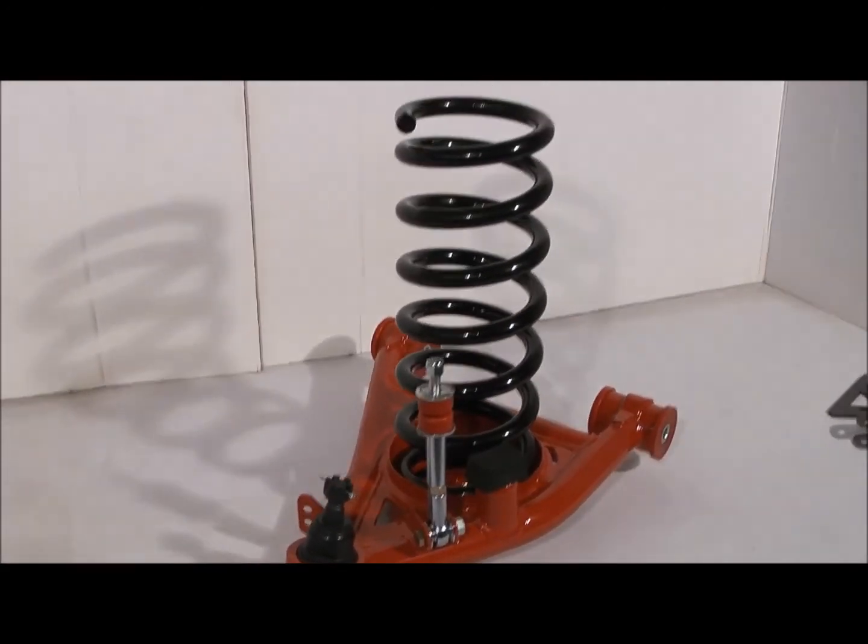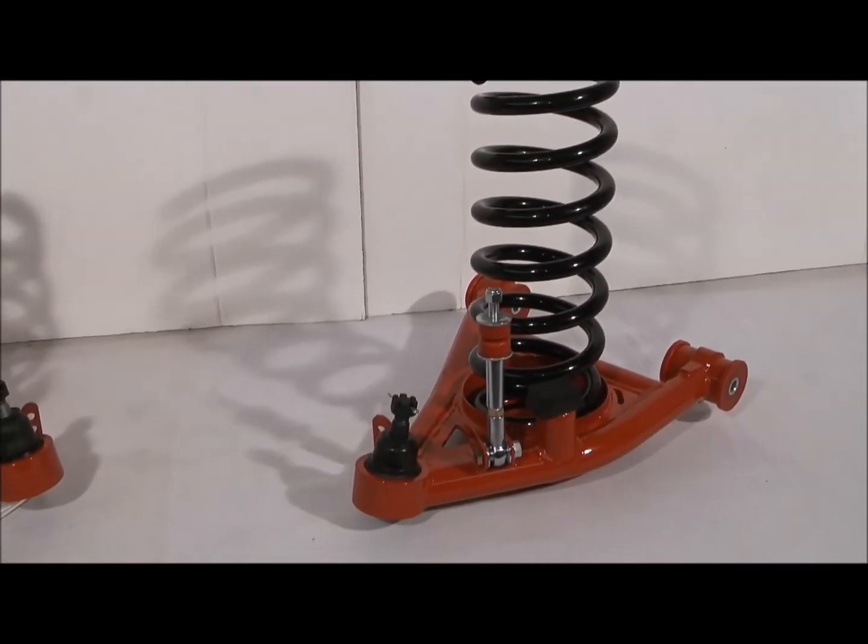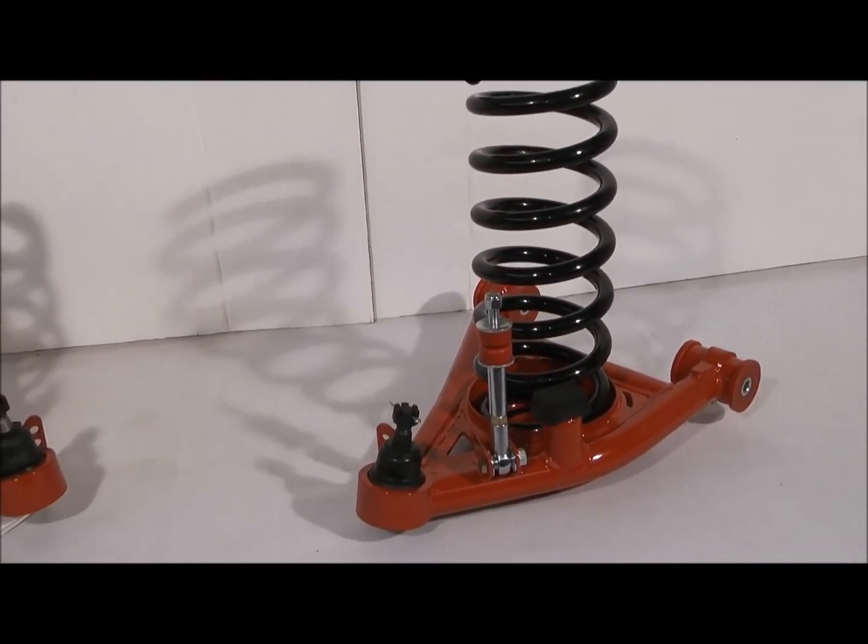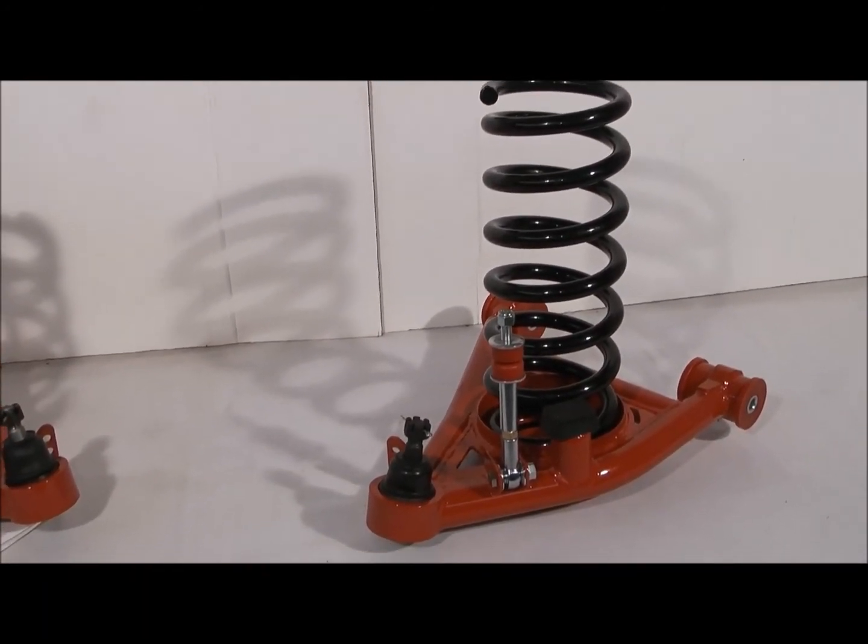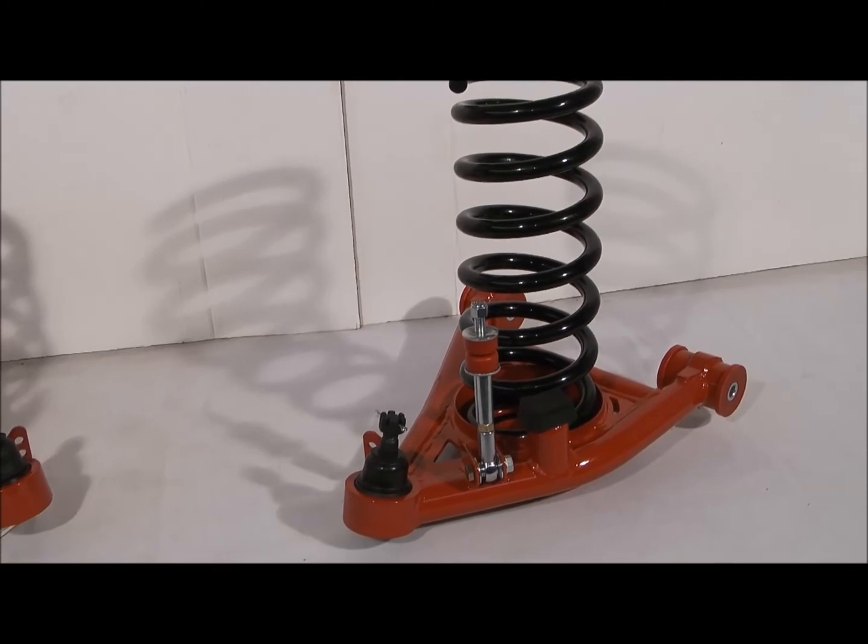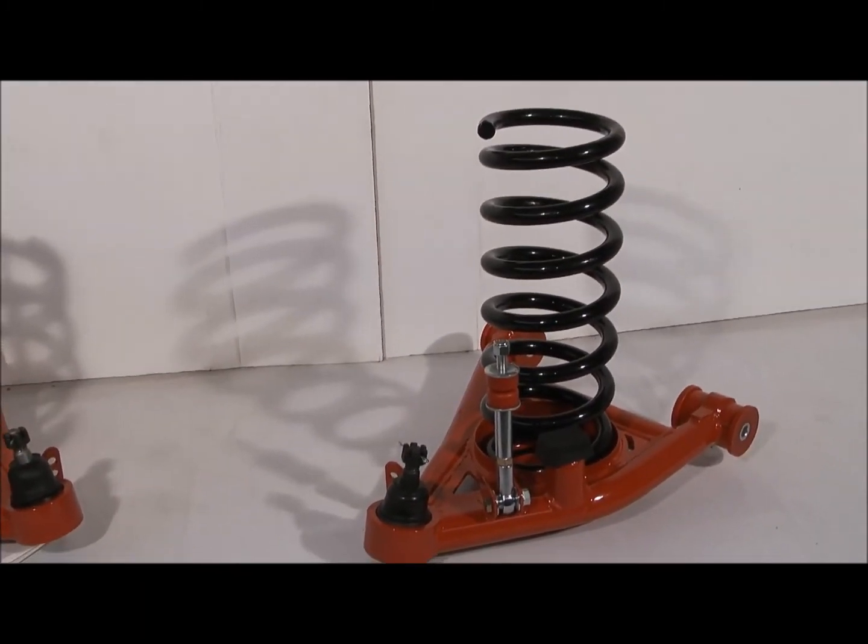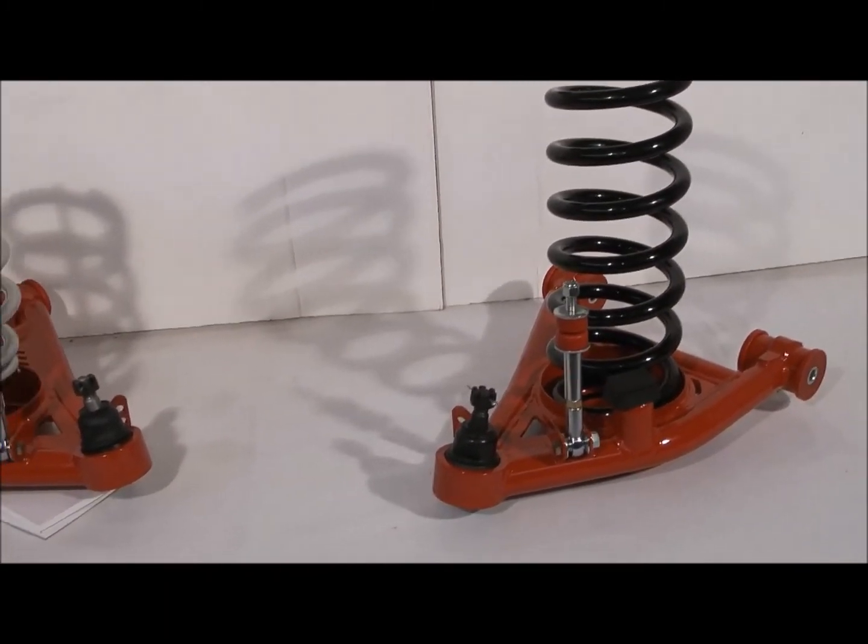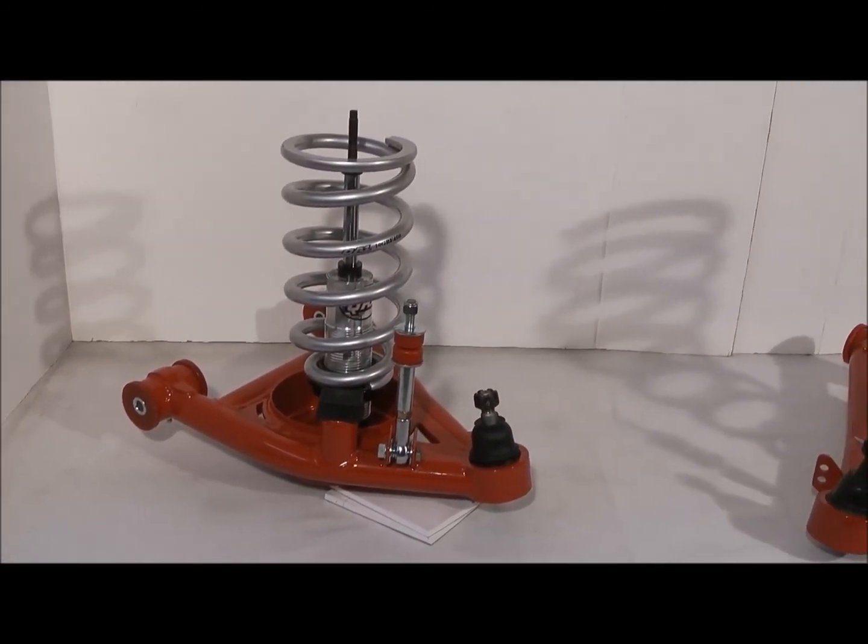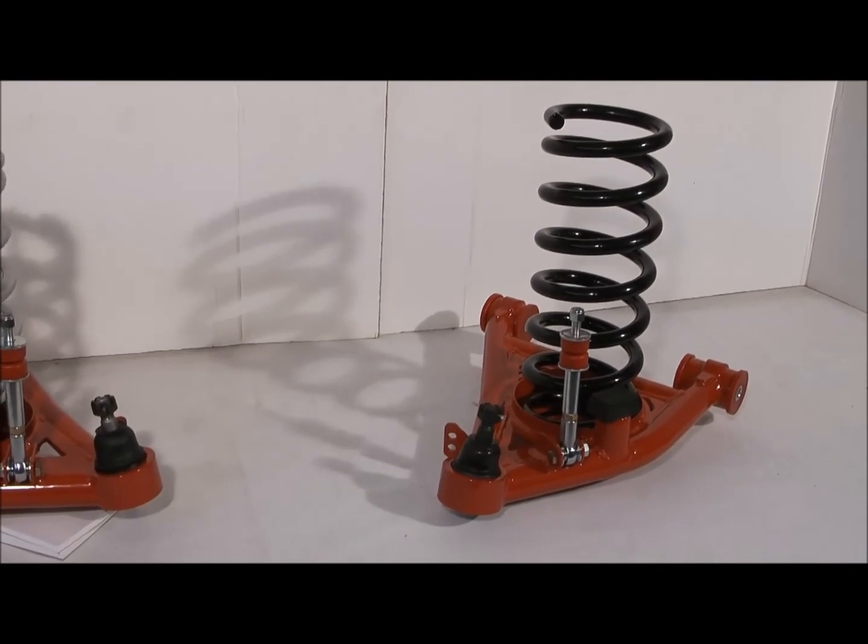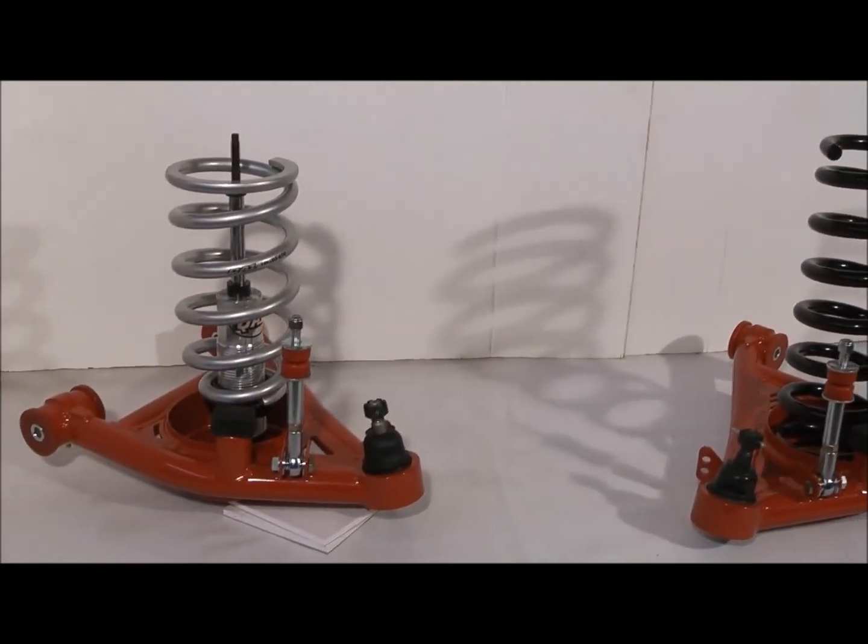So that's the new Spohn Performance RRX series tubular front lower A-arms, available for the 82 to 92 third gen F-body Camaro Firebird, 78 to 87 GM G-body cars, and the 82 to 04 two-wheel drive S10 truck and Blazer. Thanks for watching. I'm Steve Spohn and we'll see you at the track.